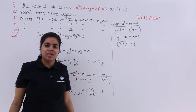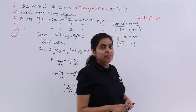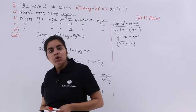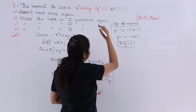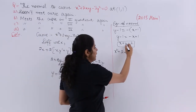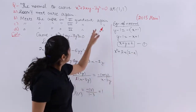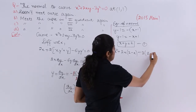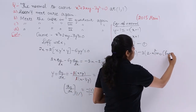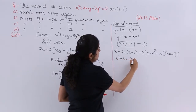The equation x + y = 2 is very important now because we use it to find the intersection with the curve. Substituting y = 2 − x from the normal equation into the curve equation x² + 2xy − 3y² = 0, we get: x² + 2x(2 − x) − 3(2 − x)² = 0.